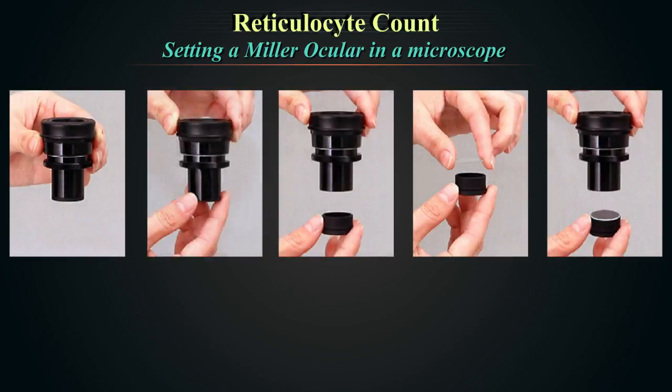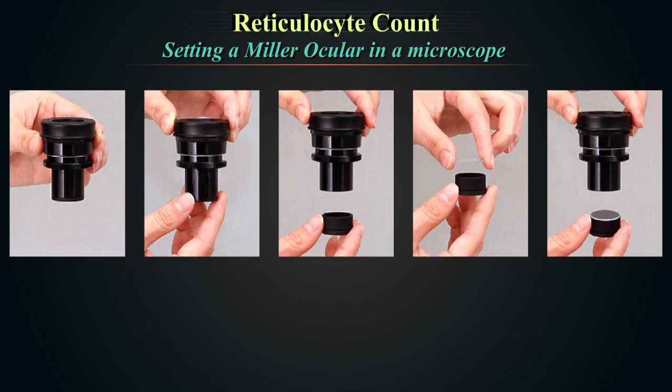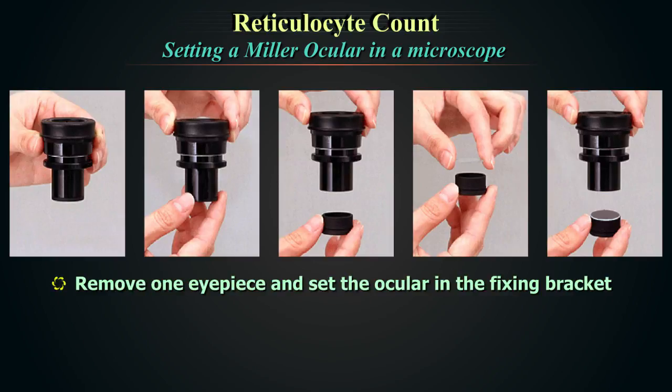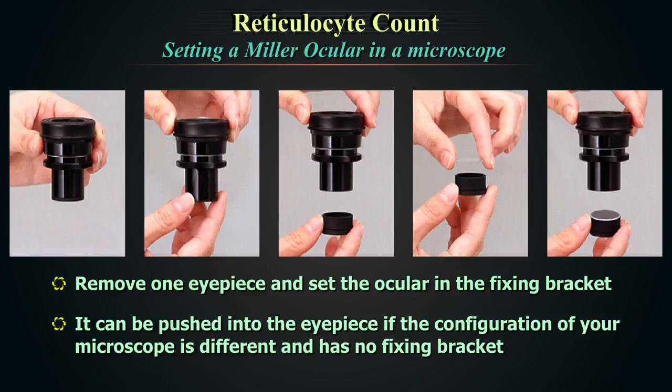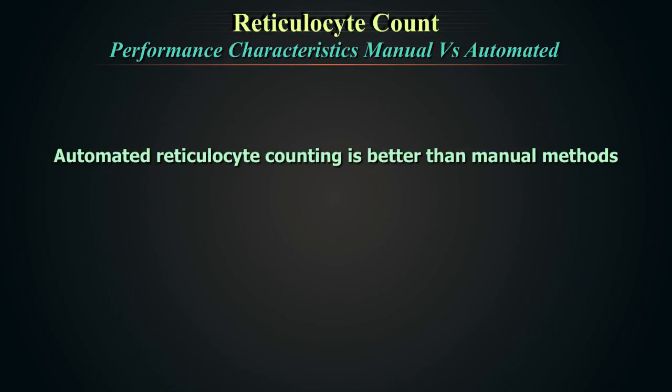To set up a Miller's ocular in a microscope: remove one eyepiece and set the ocular in the fixing bracket. Turn the end of the eyepiece counter-clockwise and remove the fixing bracket for the micrometer. Place the micrometer on the fixing bracket with the printed surface down, then place it into the eyepiece. The exact setup may differ between makers and models.